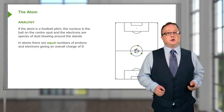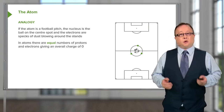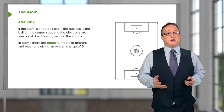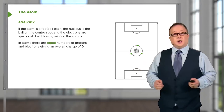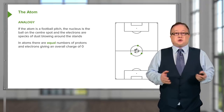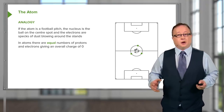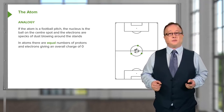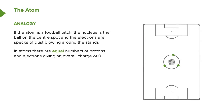The analogy often used for the structure of an atom is that the nucleus is the ball on the centre spot of a football field, with the electrons actually being the tiny specks of dust blowing around the stands. Since within an atom there are equal numbers of protons and electrons, the overall charge of an atom as its element is zero — because the number of protons with a charge of plus one equals the number of electrons with a charge of minus one.